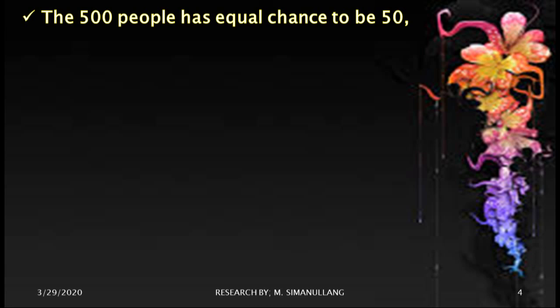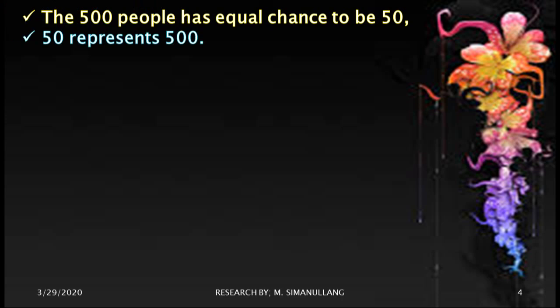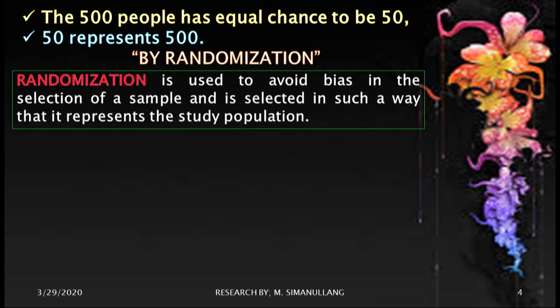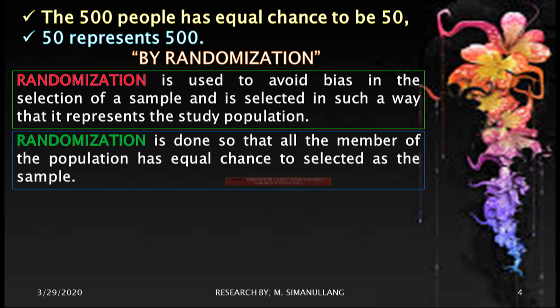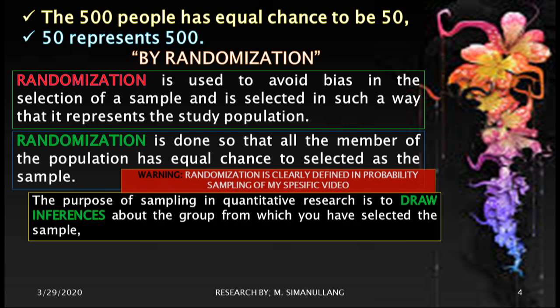How do all 500 people get an equal chance to be selected, and how does 50 represent 500? This must be done by randomization. Randomization is used to avoid bias in the selection of a sample and ensures the sample represents the study population. All members of the population have equal chance to be selected. There are specific videos dealing with this, especially discussing probability sampling methods or techniques.